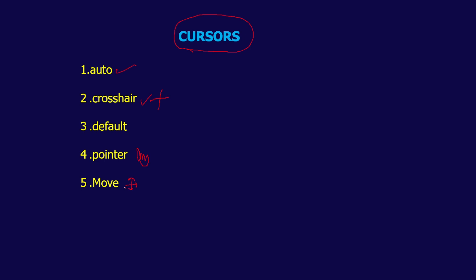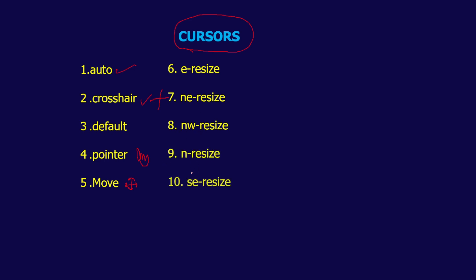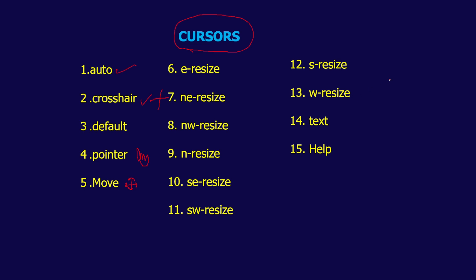Next you have move, which will be a plus mark with arrows. Then you have east resize, northeast resize, northwest resize, north resize, southeast resize, southwest resize, south resize, west resize, text, and help. The text cursor will be in the I-beam format, help will be a question mark, and wait will be a rolling circle. These are the cursors available in CSS properties.